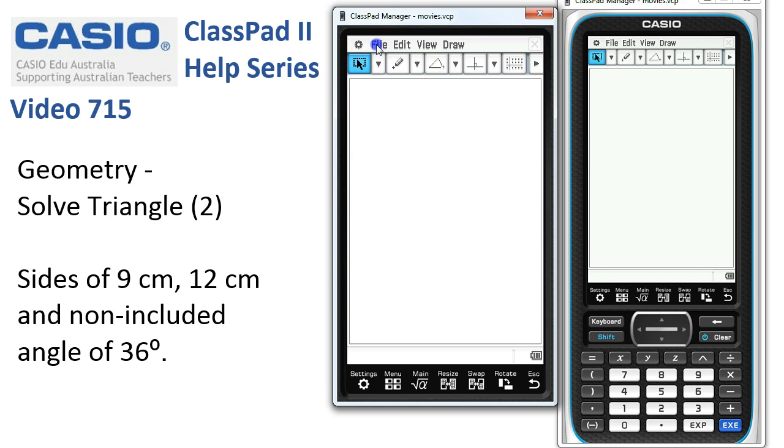So we'll start in geometry with a file, new, and choose the triangle tool, create a triangle, and we're ready to begin.